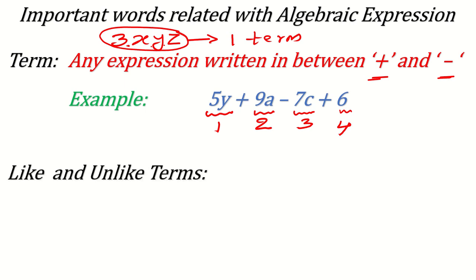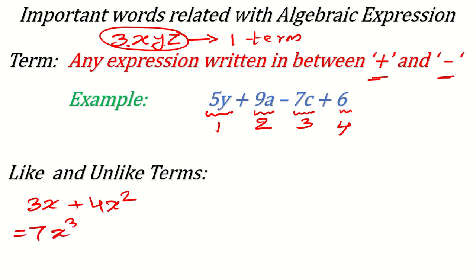Now, like and unlike terms — this is where students often make mistakes. For example, in 3x + 4x², some students incorrectly add them to get 7x³. That is wrong. You cannot add 3x and 4x² because 3 and 4 are not written with the same variable power. Like terms must have the same variable raised to the same power.